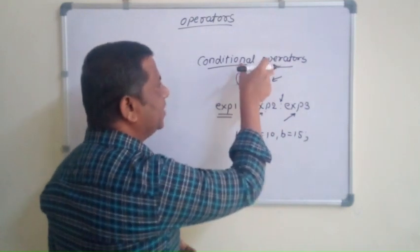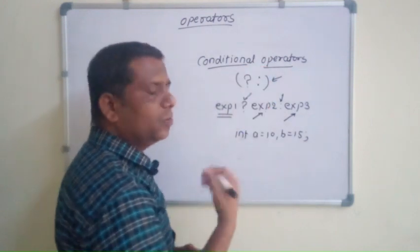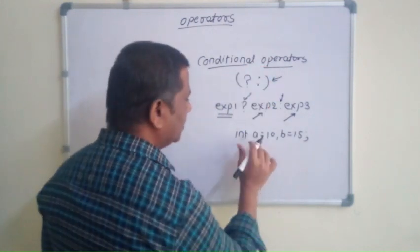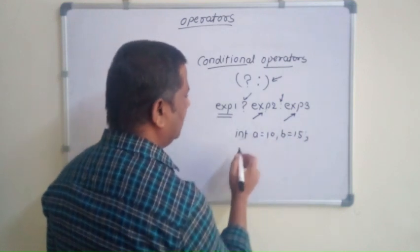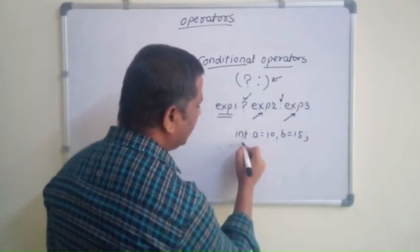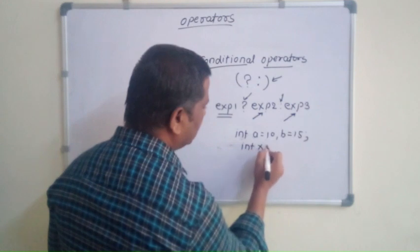So chaliyye, dhekhthe hai, by using this conditional operators, how to check the greater number. So humare dho numbers hai, int a is equal to 10 and b is equal to 15. So humain, alright, integer variable laghe ga, int x.